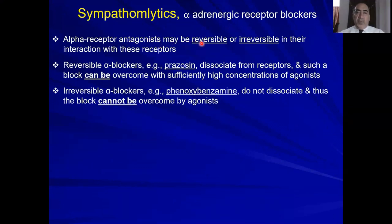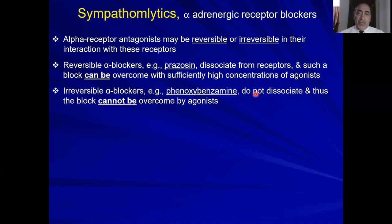Alpha-adrenergic blockers may be reversible or irreversible, depending on the nature of their binding with the alpha receptor. If they bind and then dissociate from their receptor — such as prazosin — these drugs are reversible, and you can regain the effect again if you add more agonist such as adrenaline or noradrenaline. Irreversible alpha blockers bind to the alpha receptor but do not dissociate, or at least they stay bound to the receptor for a very long time. You cannot overcome their effect by adding more agonist.